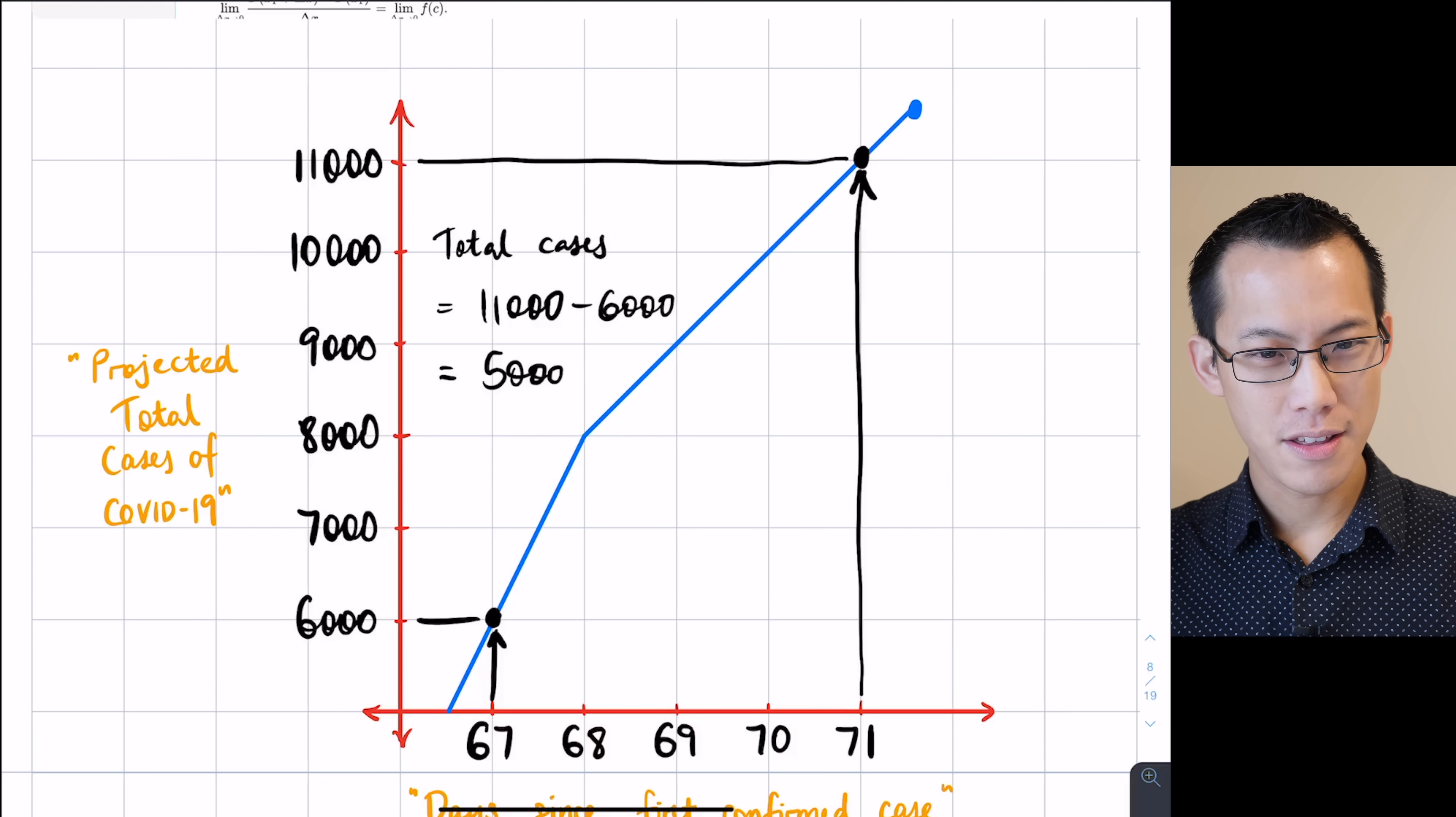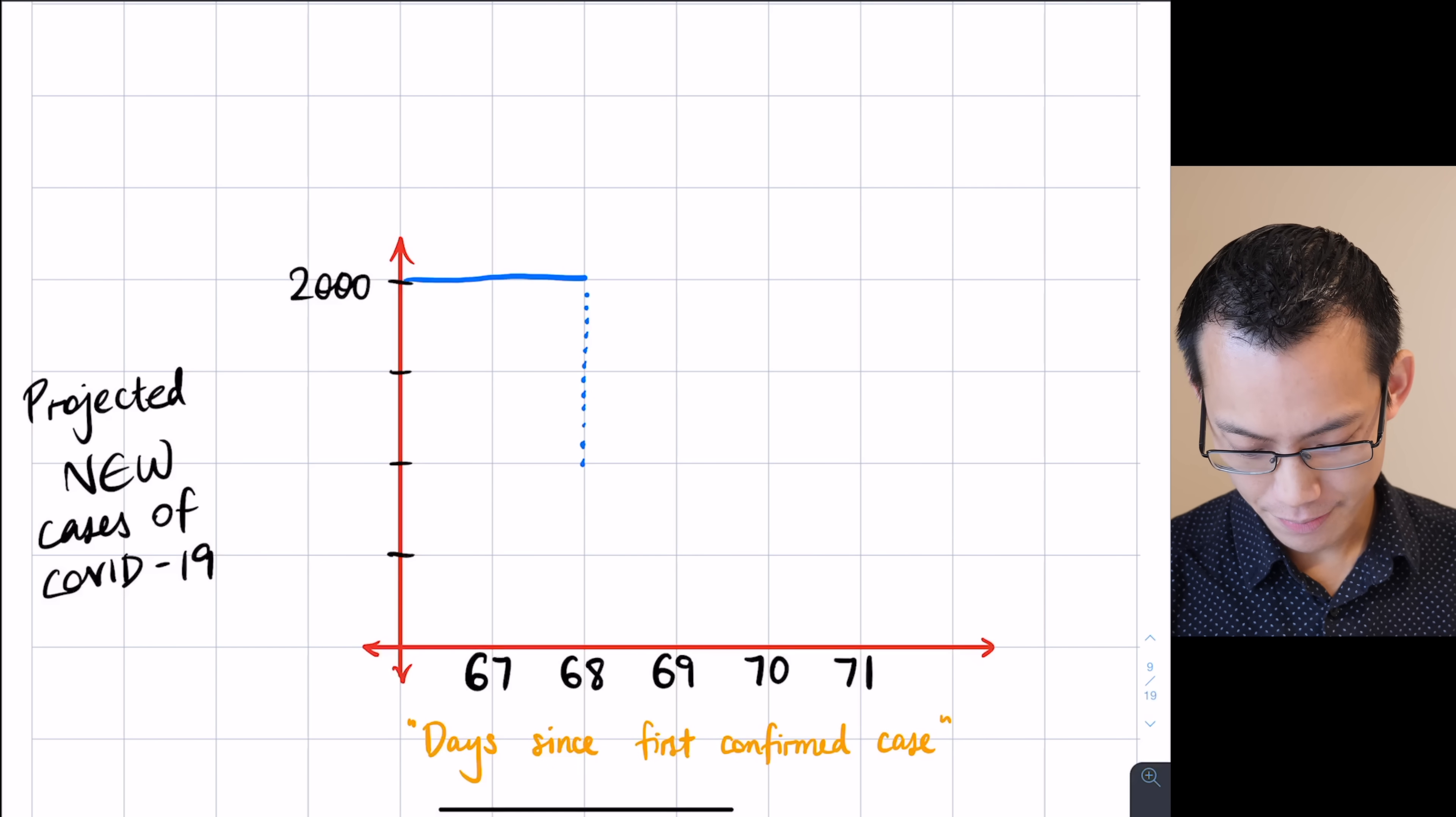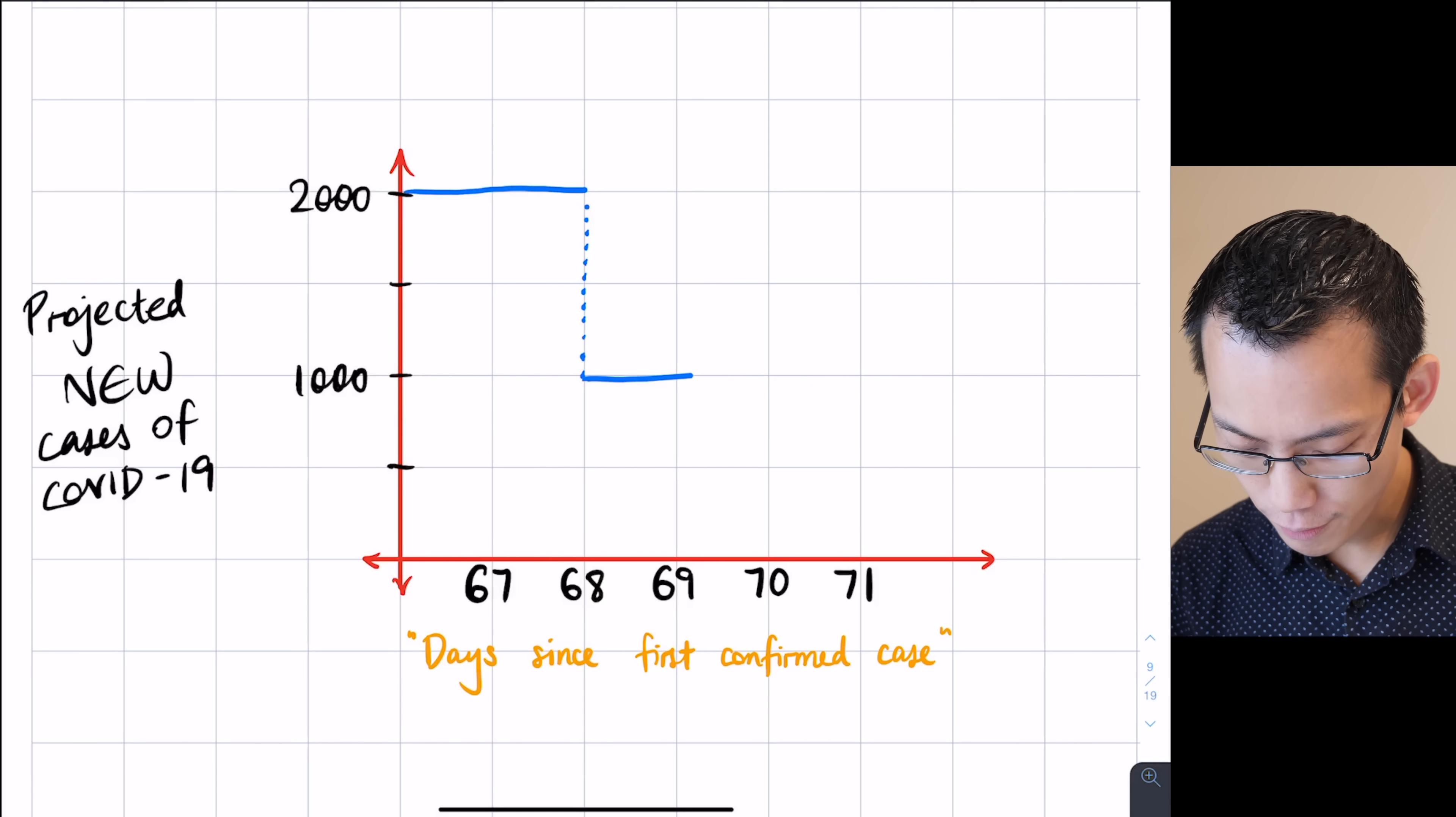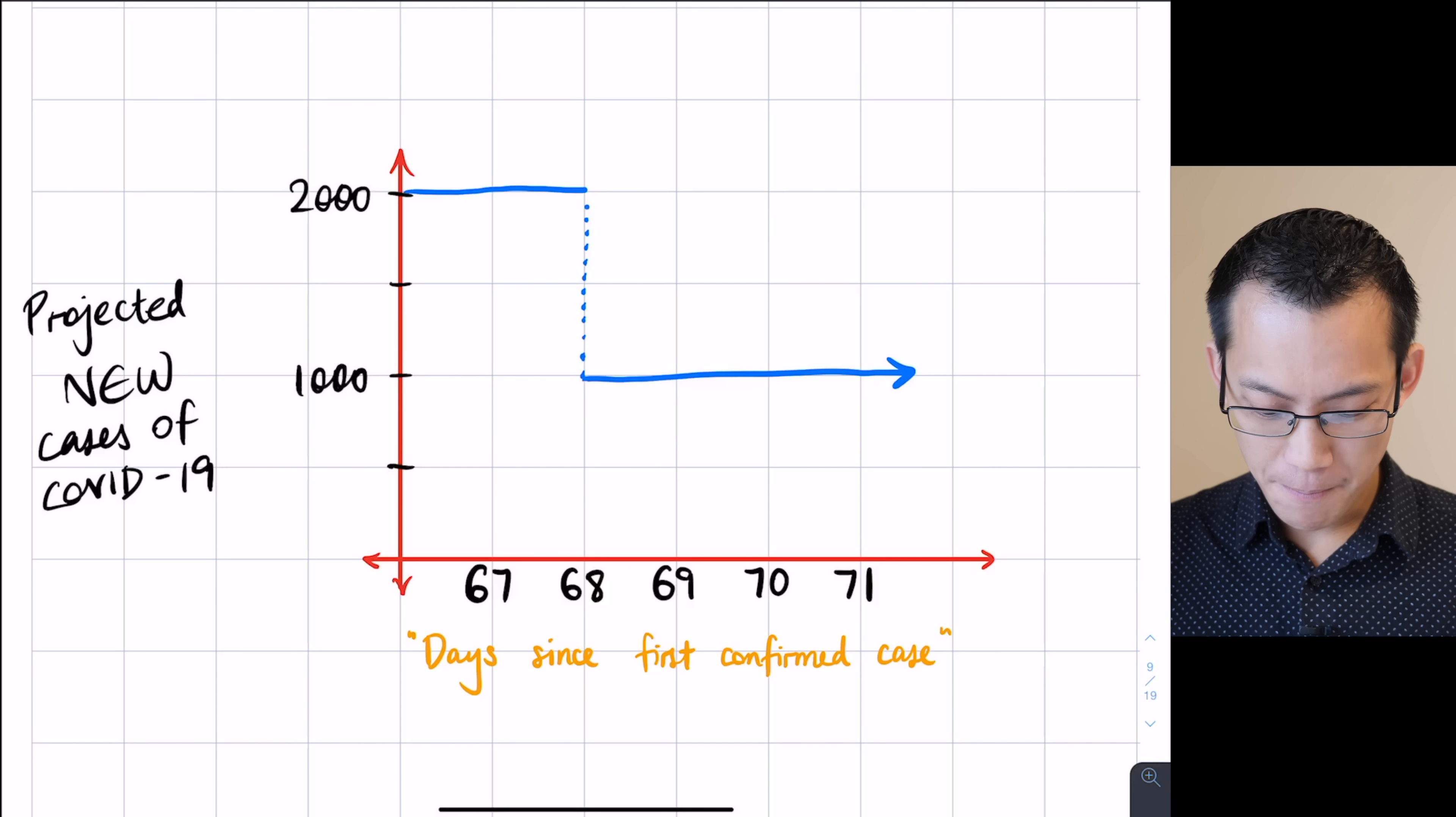Now what does that mean on the graph of the gradient function that we were doing down below? Well I'm not going to be at two thousand anymore. It just abruptly, in this model anyway, it abruptly drops down to one thousand and it continues. So let's go to our gradient graph over here. It kind of has this break in time like so and a thousand is going to be here on my vertical scale. So from day 68 onwards, I'm going to have, let's go in blue now, I'm going to go back to what the shape of the graph is. Now this is a weird looking graph. We call it a step function because it looks like a set of steps.